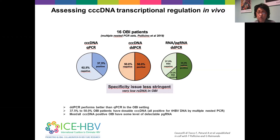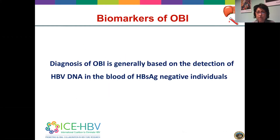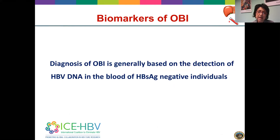In these slides are the preliminary results of a study conducted in collaboration with Massimo Levrero's group in Lyon. Droplet digital PCR appears to perform better than quantitative real-time PCR in the detection of cccDNA in OBI individuals. In most cccDNA-positive OBI patients, we could also detect by digital PCR a small amount of pre-genomic RNA, suggesting it is possible to assess cccDNA transcriptional activity in vivo. Since liver biopsy is not always available due to its invasiveness, OBI diagnosis is generally based on detection of HBV DNA in blood from HBsAg-negative individuals.